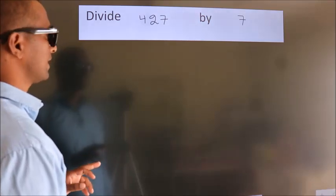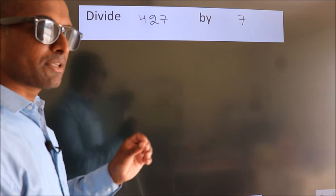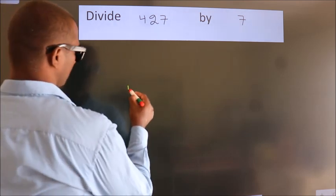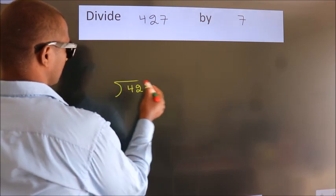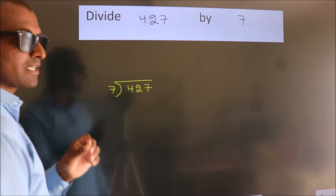Divide 427 by 7. To do this division, we should frame it in this way. 427 here, 7 here. This is your step 1.